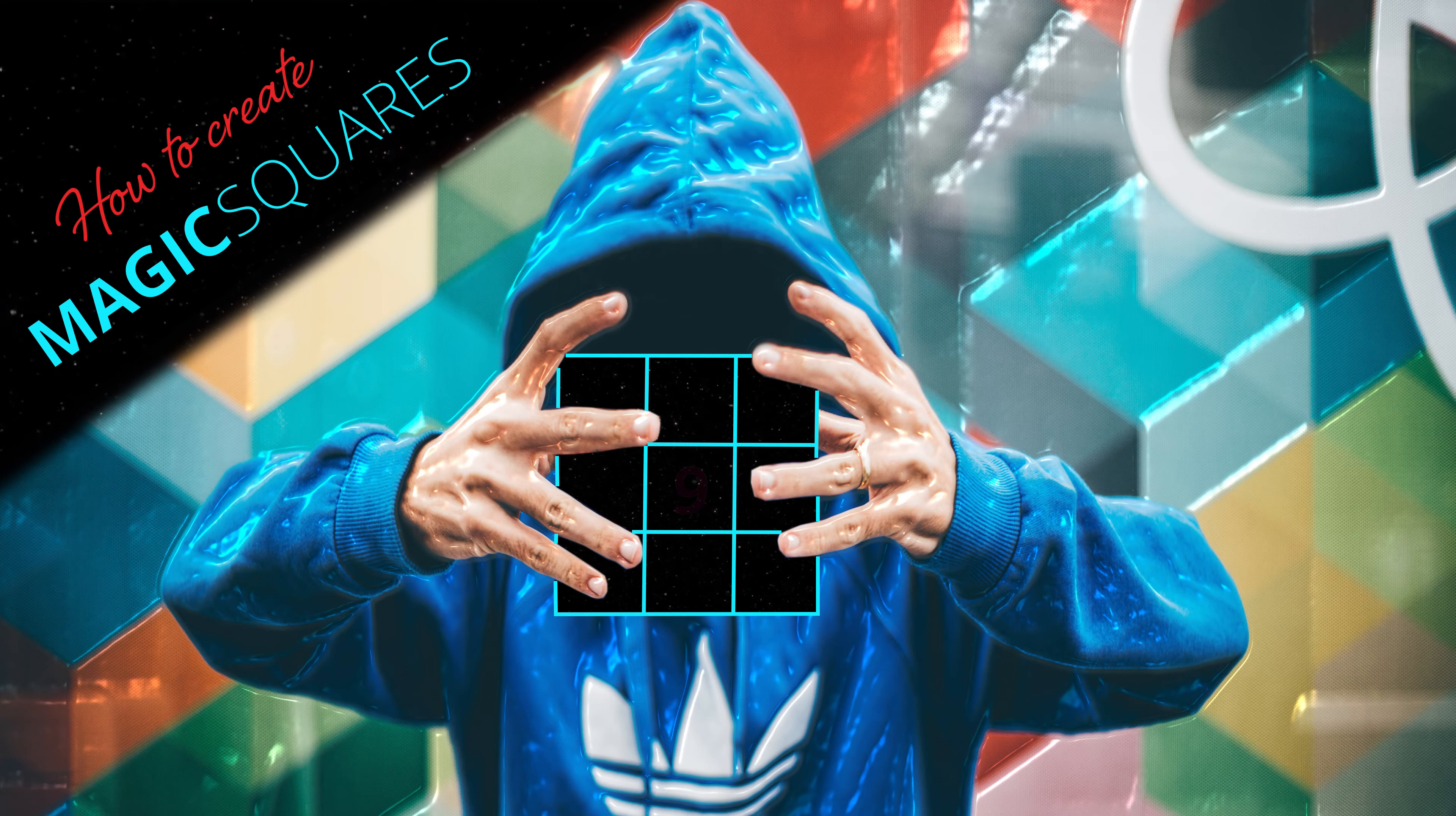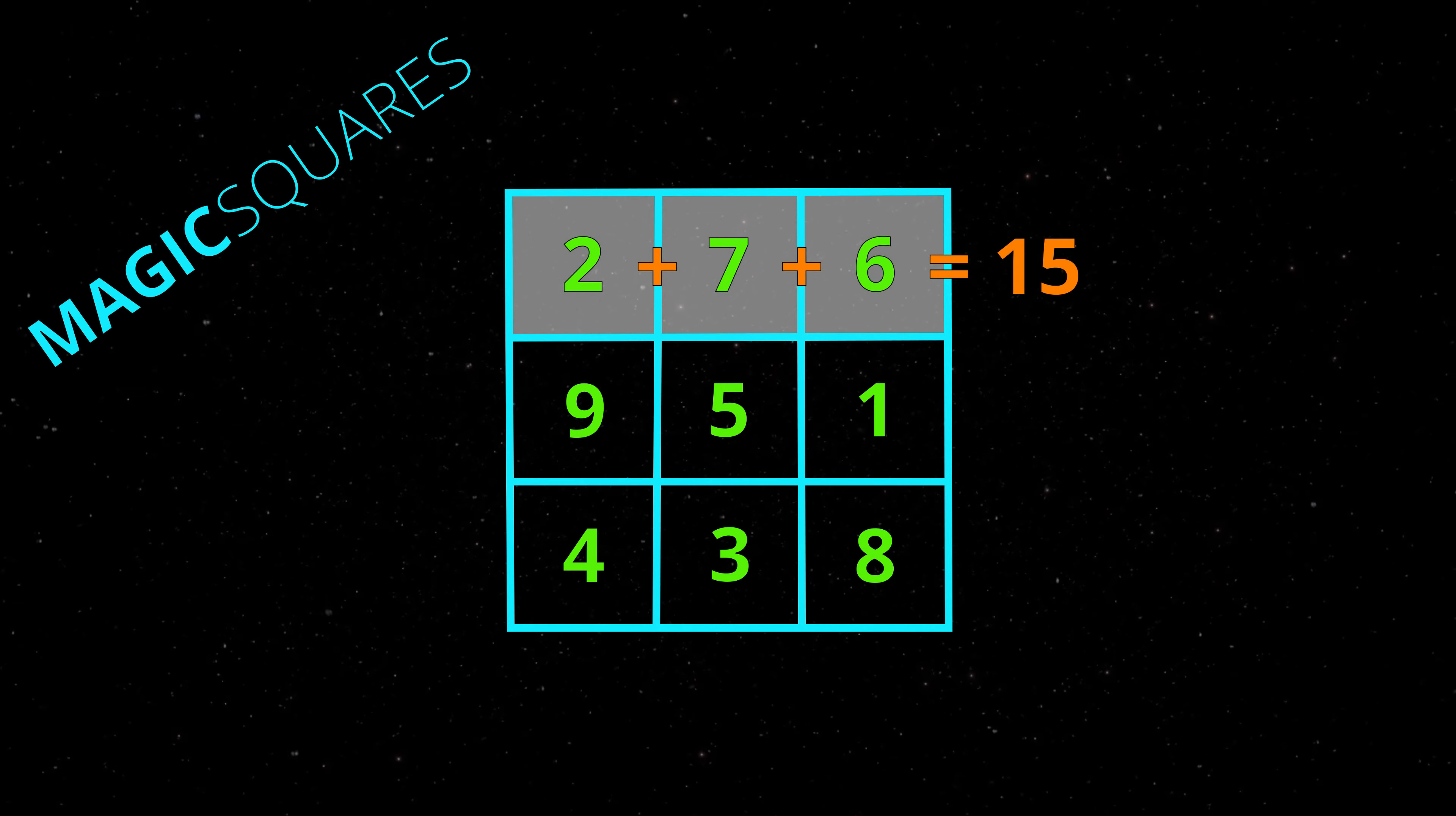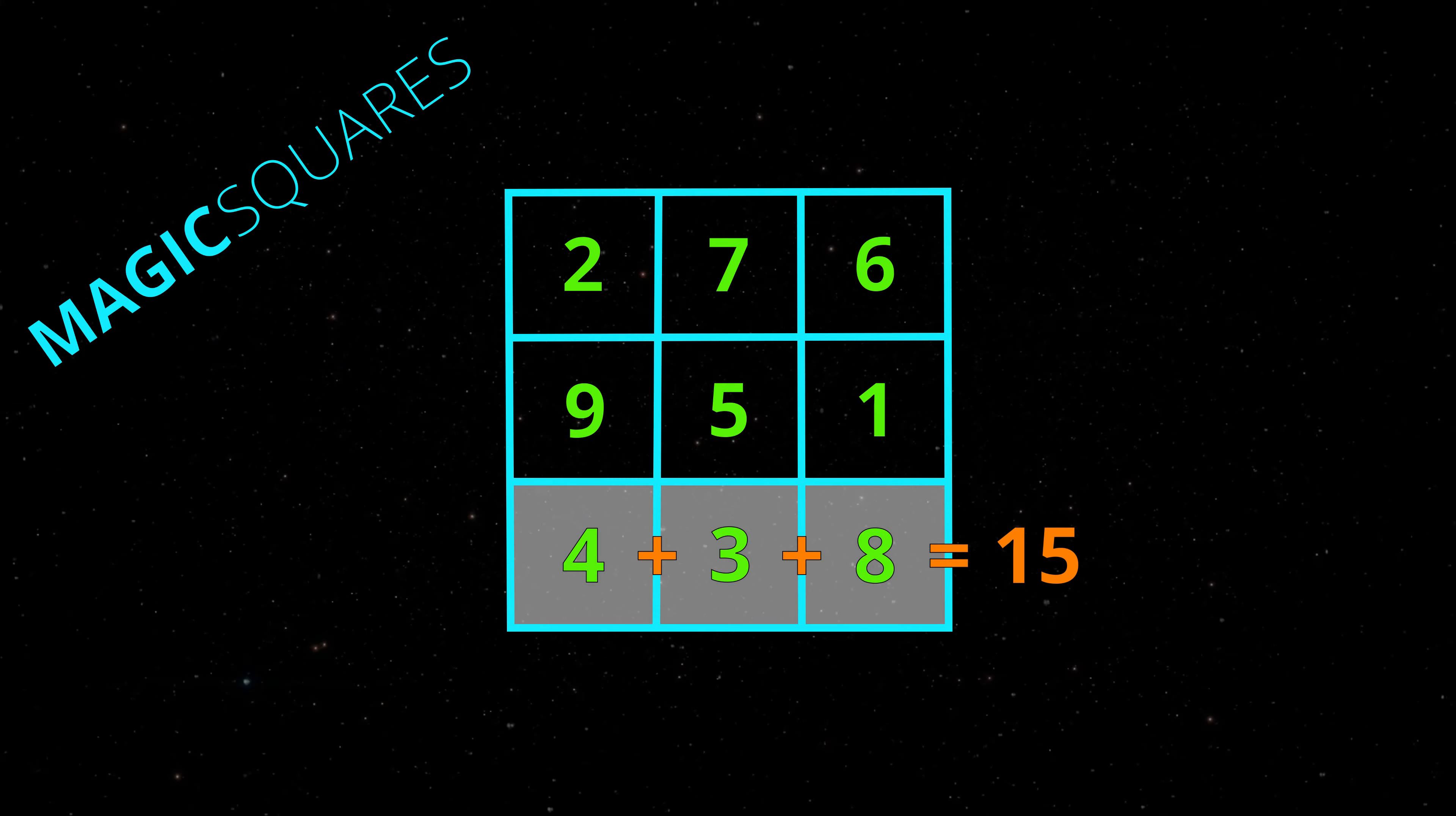Look at this magic square. In the top row, 2 plus 7 plus 6 adds to 15. The second row adds to 15, and the third row adds to 15.